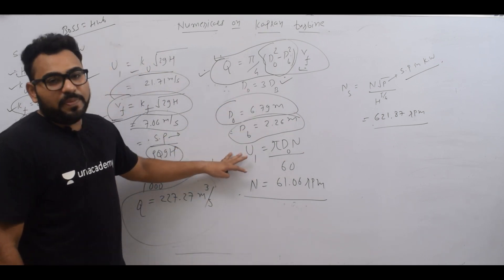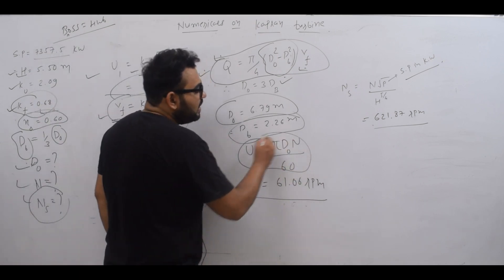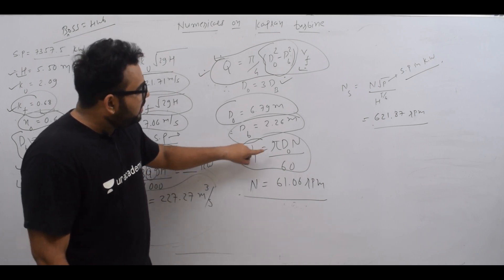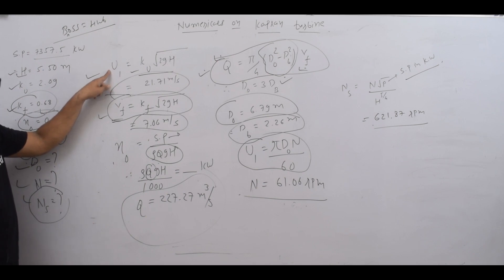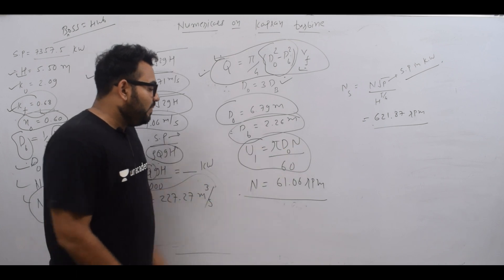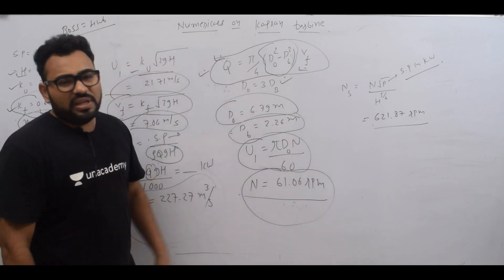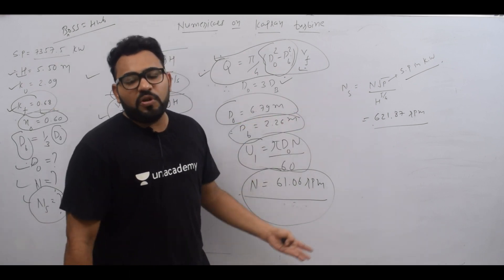Now we need to find the speed. We know U1 equals πdN/60, where d is the outer diameter of the runner. We have the U1 value and the outer diameter do, so from this we can find N, which equals 61.06 RPM.